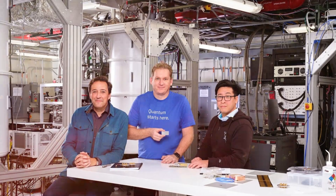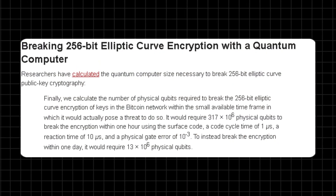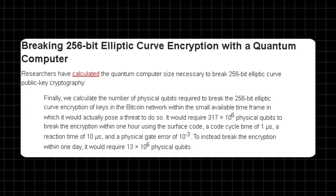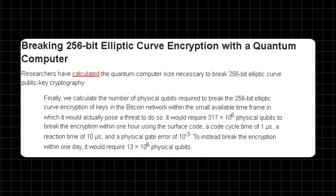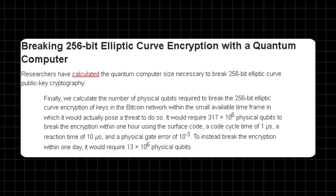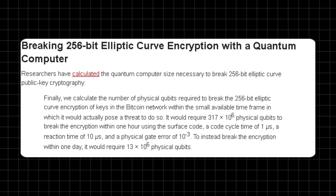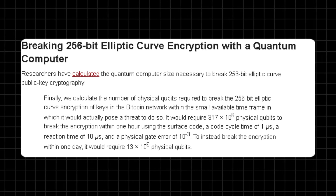Current passwords could become vulnerable once quantum computers reach a certain level of sophistication. Researchers estimate that breaking a 256-bit ECC encryption with a quantum computer would require about 13 million qubits and a day of processing. While the largest quantum computers today are much smaller, the trajectory is clear.